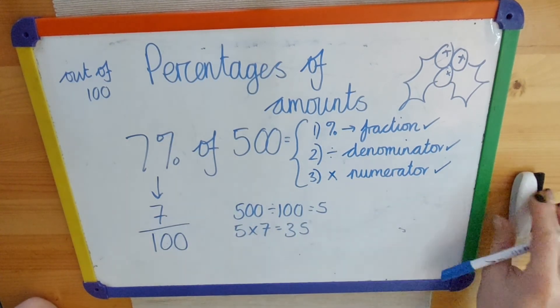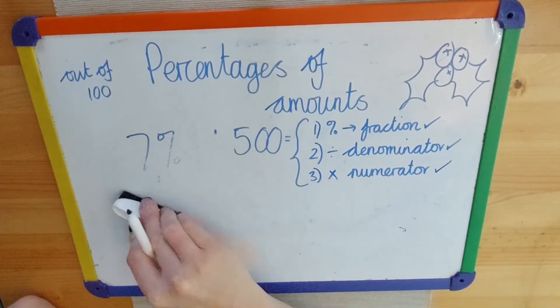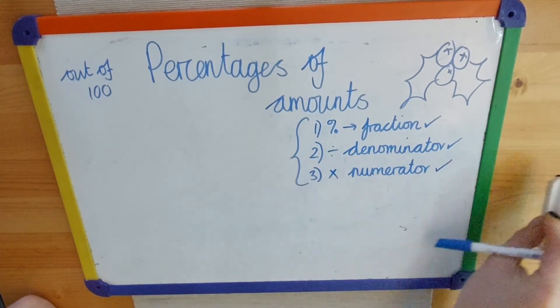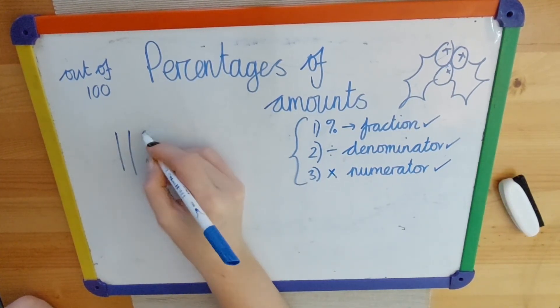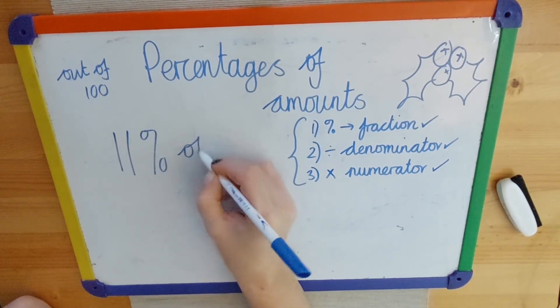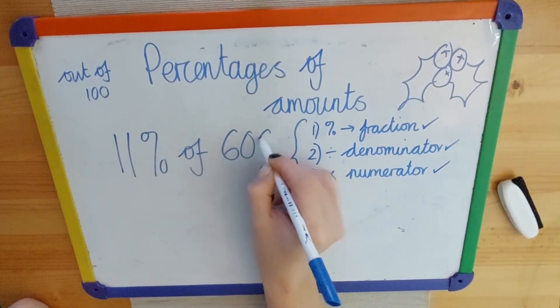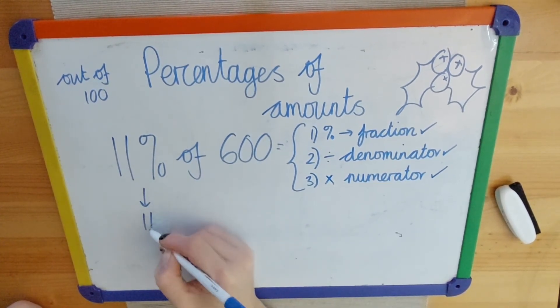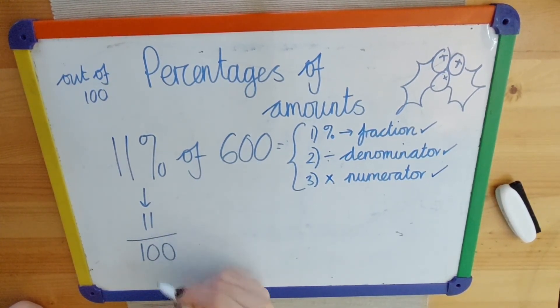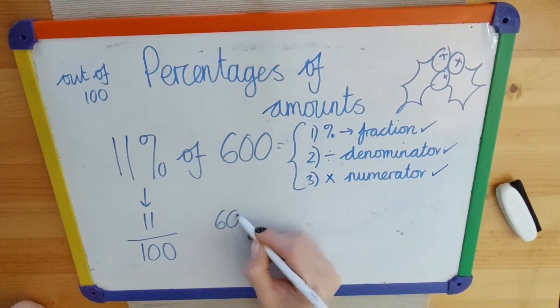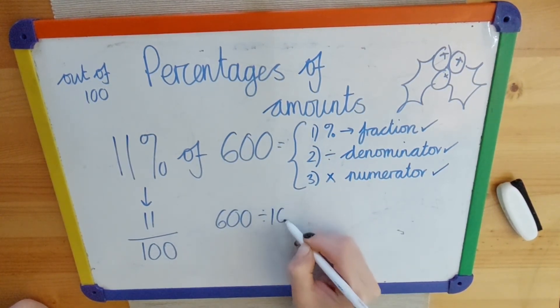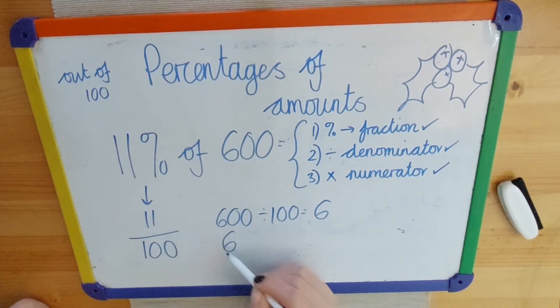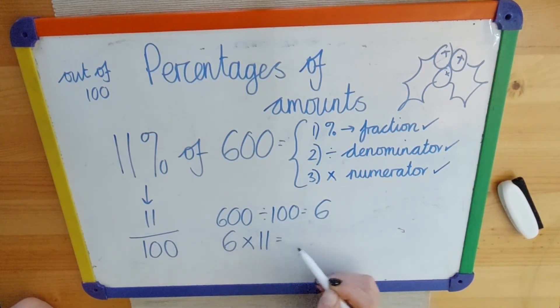We'll look at one more. Say you wanted to find 11% of 600. I'm just giving really simple numbers here. Convert 11 into a fraction. I would do 600 divided by 100, so divide by denominator, which is 6, multiplied by the numerator. 6 multiplied by 11 equals 66.